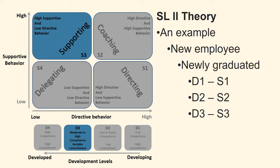You follow the employee closely for a while and can see that the employee understands a lot more than at first, but lacks a great deal of confidence. Therefore, you now evaluate him to development level D3 and select leadership style S3, where you support the employee. You become more responsive and supportive of the choices the employee makes, ask the employee for input about what and how, and help to build confidence.